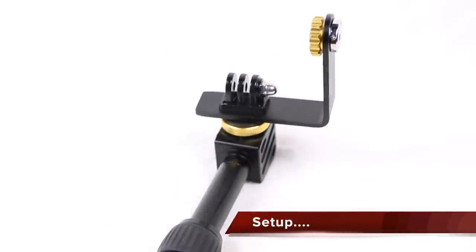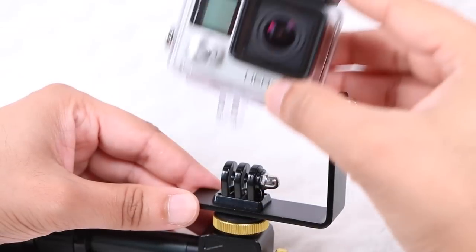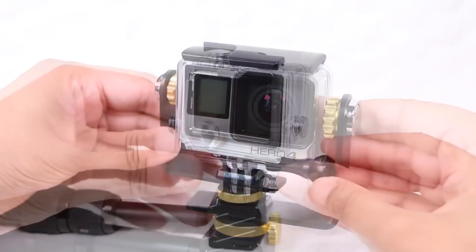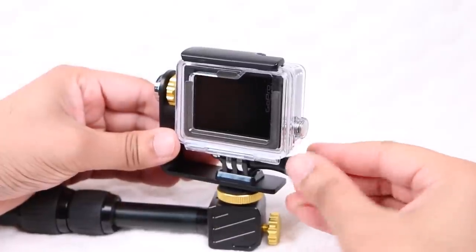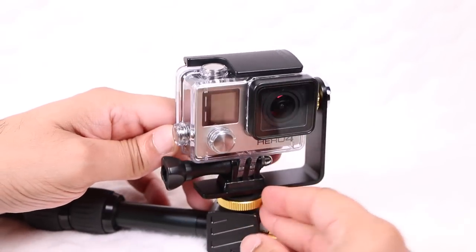Thankfully, setup is a quick and easy affair. The L-bracket carries the standard GoPro mount, allowing easy mounting of any GoPro camera, ensuring the side with the WiFi button is on the opposite side to the L-bracket. That's pretty much all there is to it.